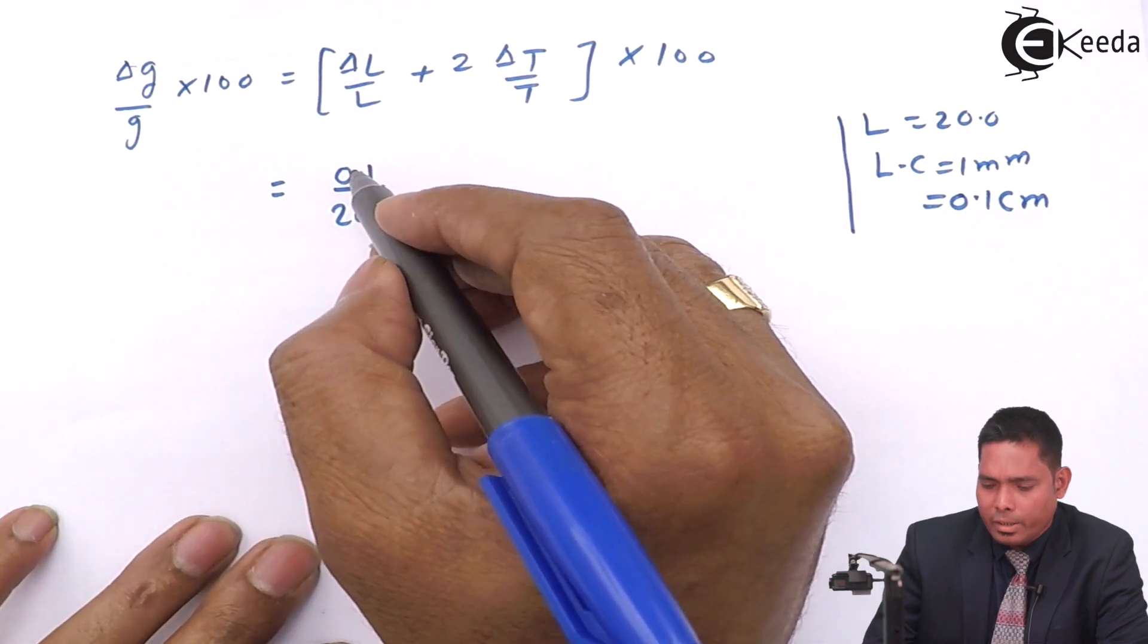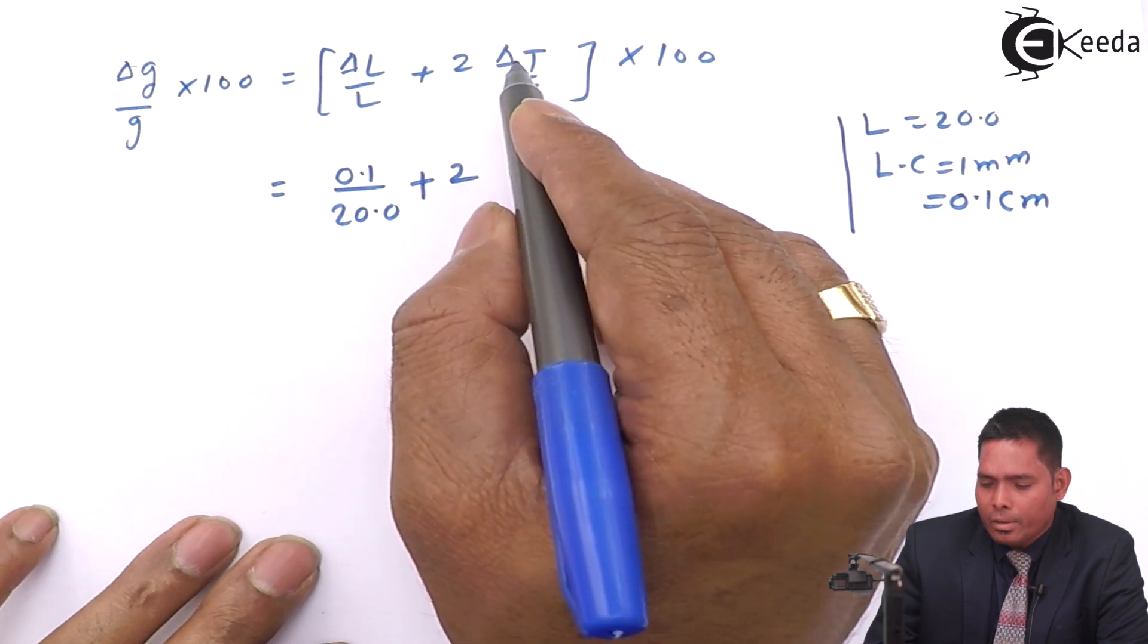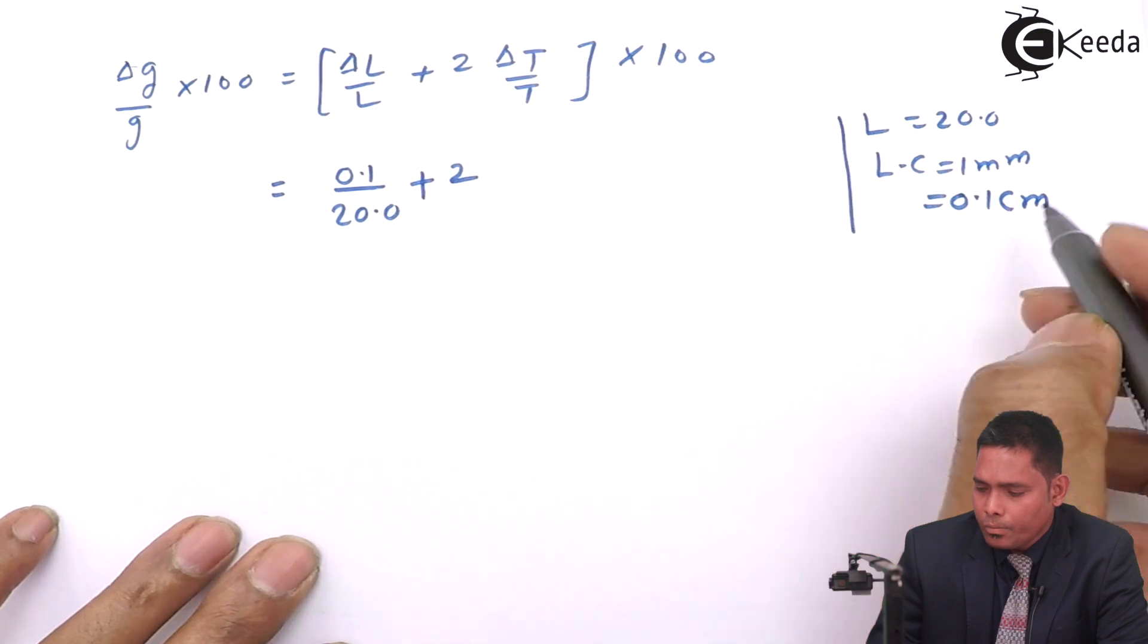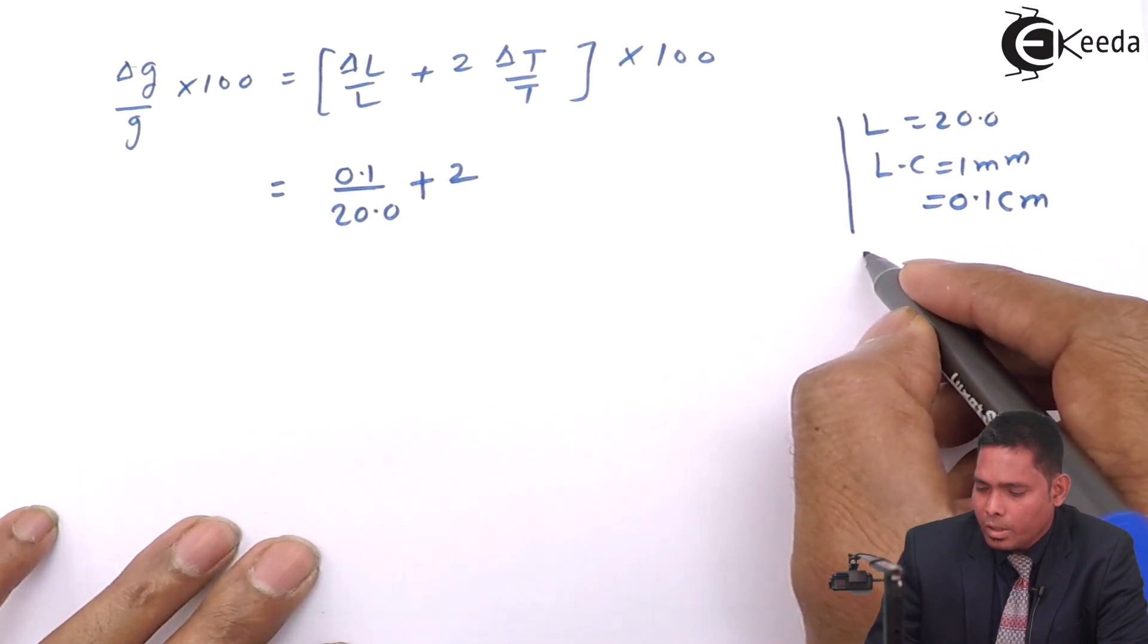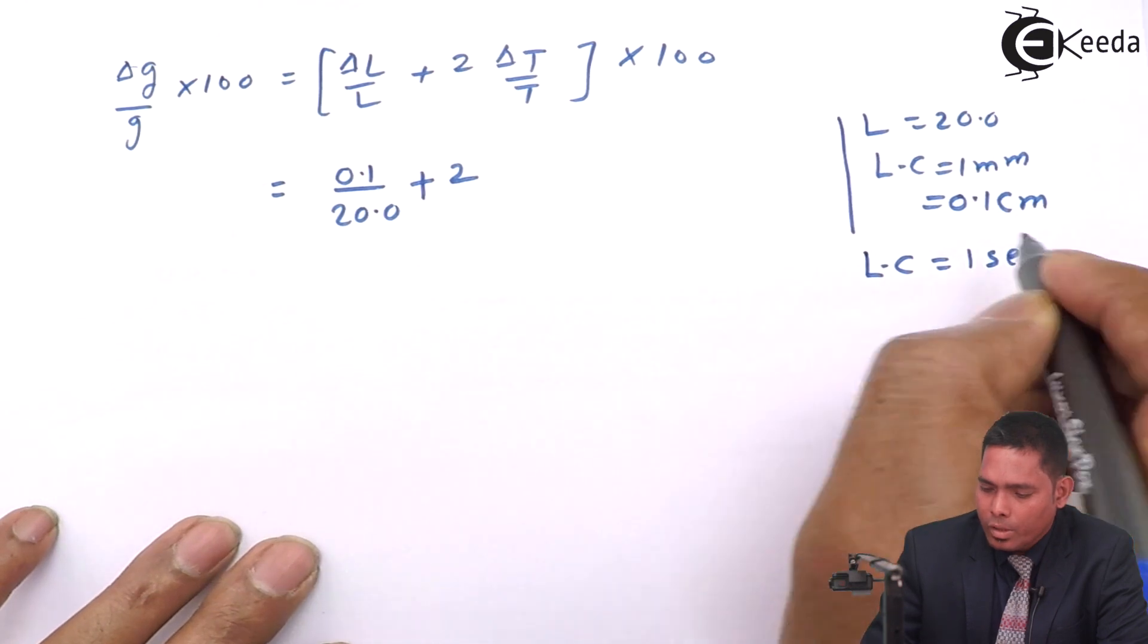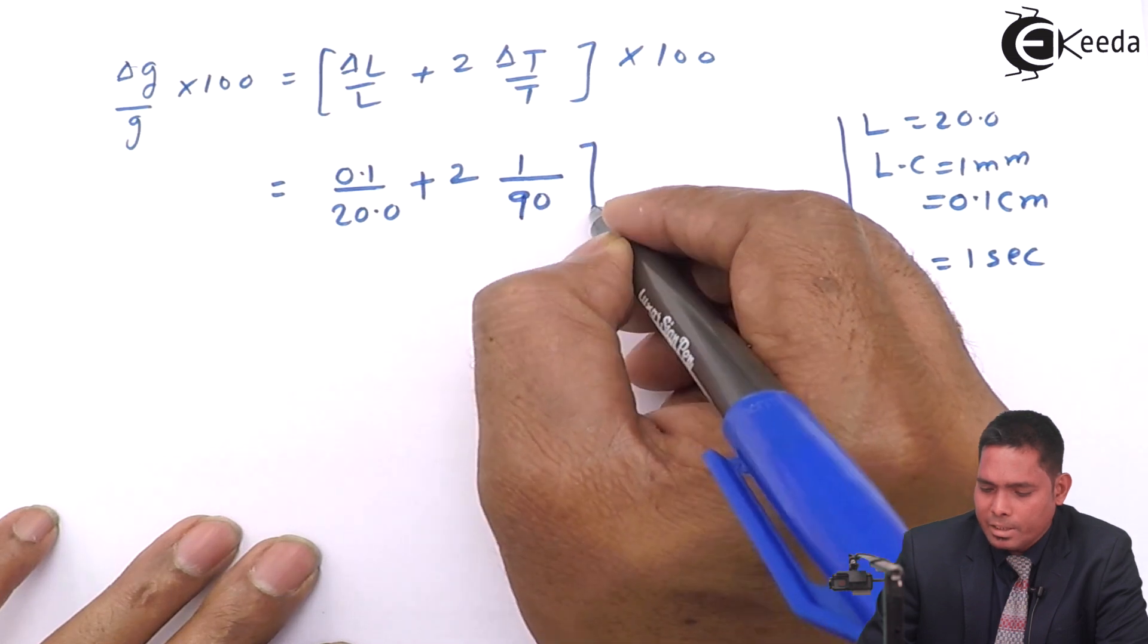So this is what you write here, plus 2Δt. The wristwatch is used, so one second is the least count. For the watch, the least count for watch is one second. So therefore this will be 1 divided by—time is 90 seconds, it has measured 90 seconds—into 100.